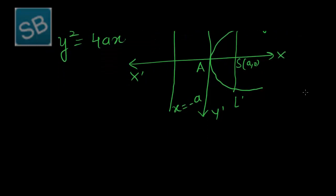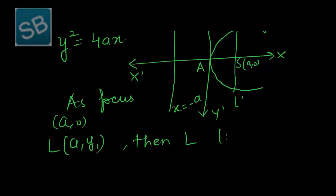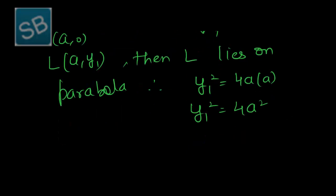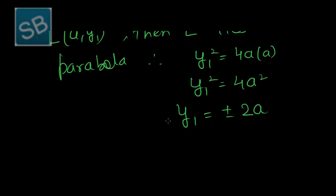We have to find if coordinate of focus is (a, 0), and we can say L is (a, y₁), then L lies on parabola. Therefore, y₁² = 4a², which gives y₁ = ±2a. That is, L is (a, 2a) and L' is (a, -2a).